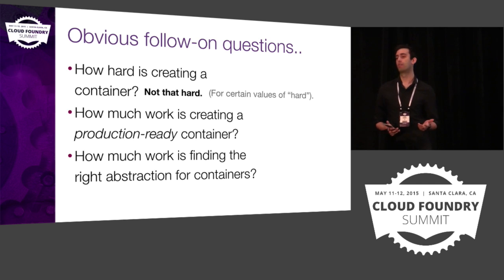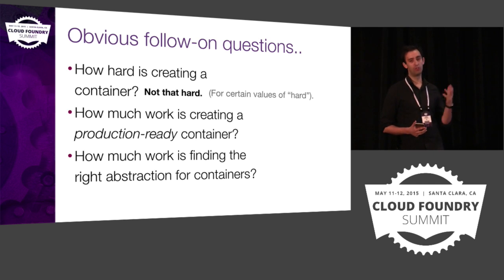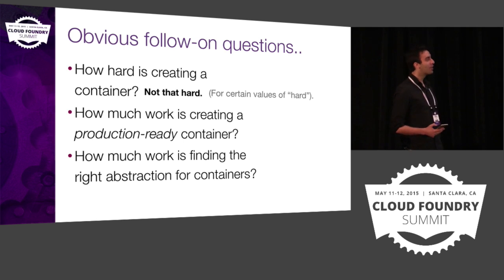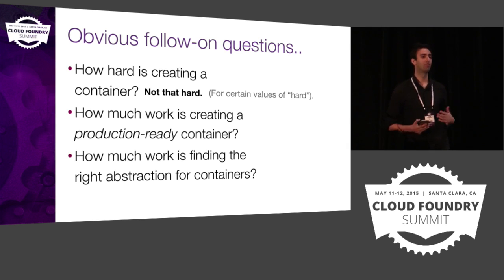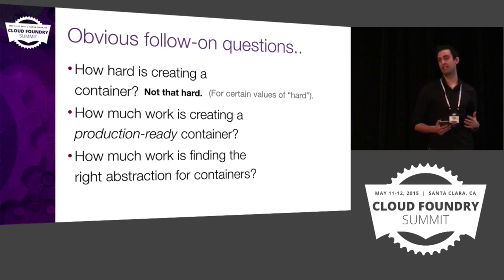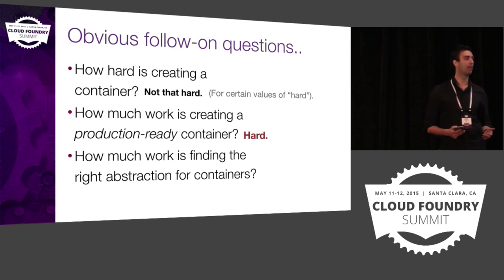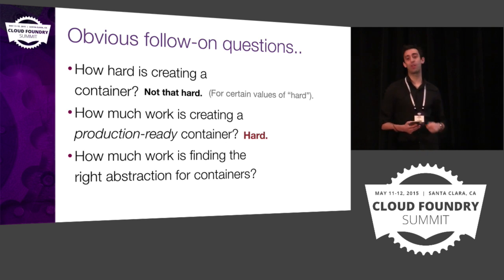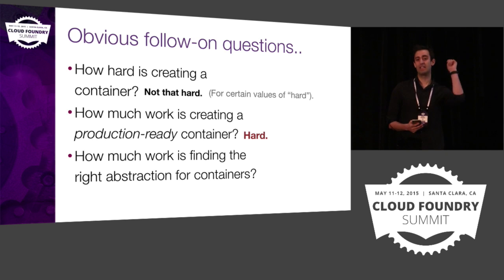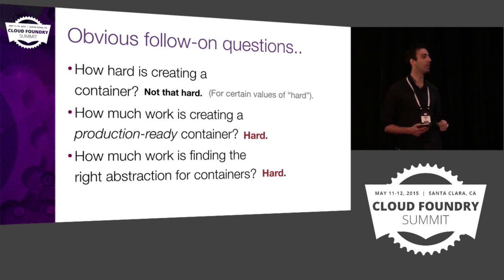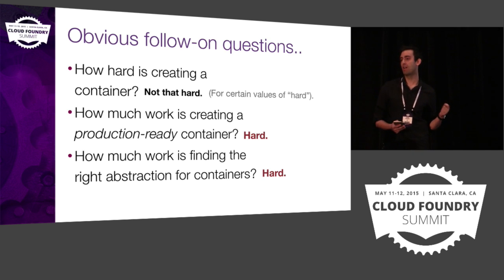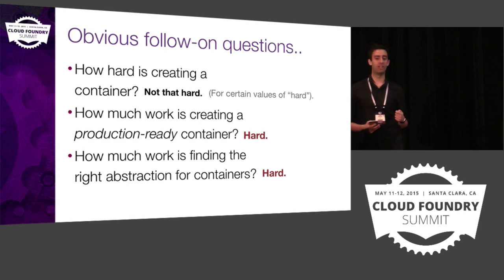Garden doesn't have a CLI. Garden has an internal API, but that's not what we treat as our external interface — we treat our external interface as the rich client. The bigger question is how much work is creating a production-ready container that we can actually trust to run applications. Using these things together is easy, but finding ways to run that securely and scalably — that's pretty hard. And even more, finding the right abstractions to expose to users in a way that makes sense, which is really Diego's problem, not Garden's — that is super hard.